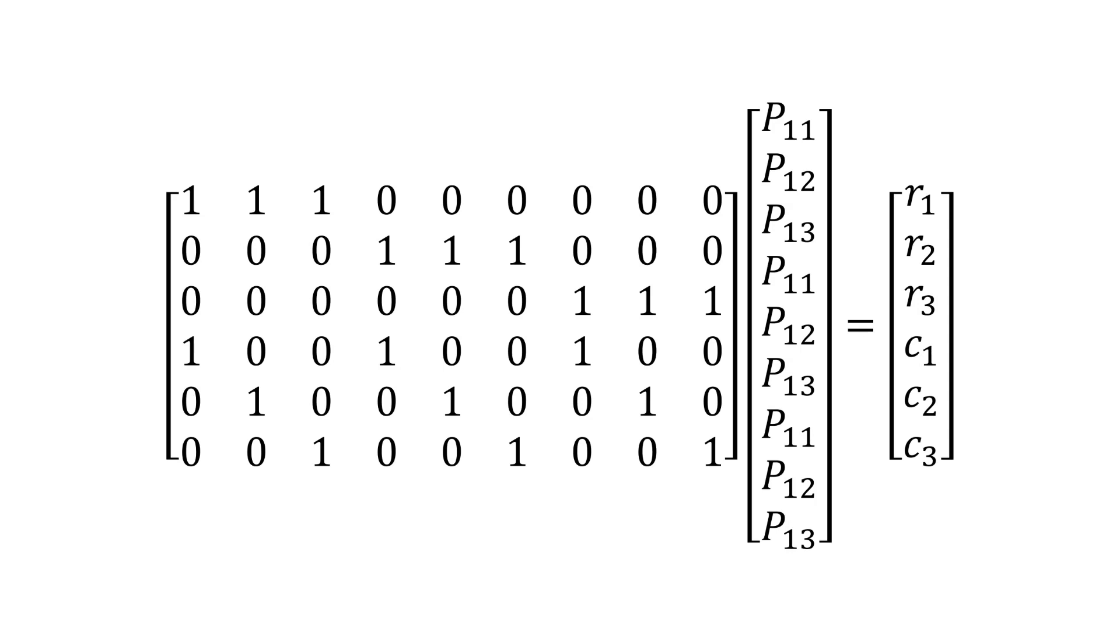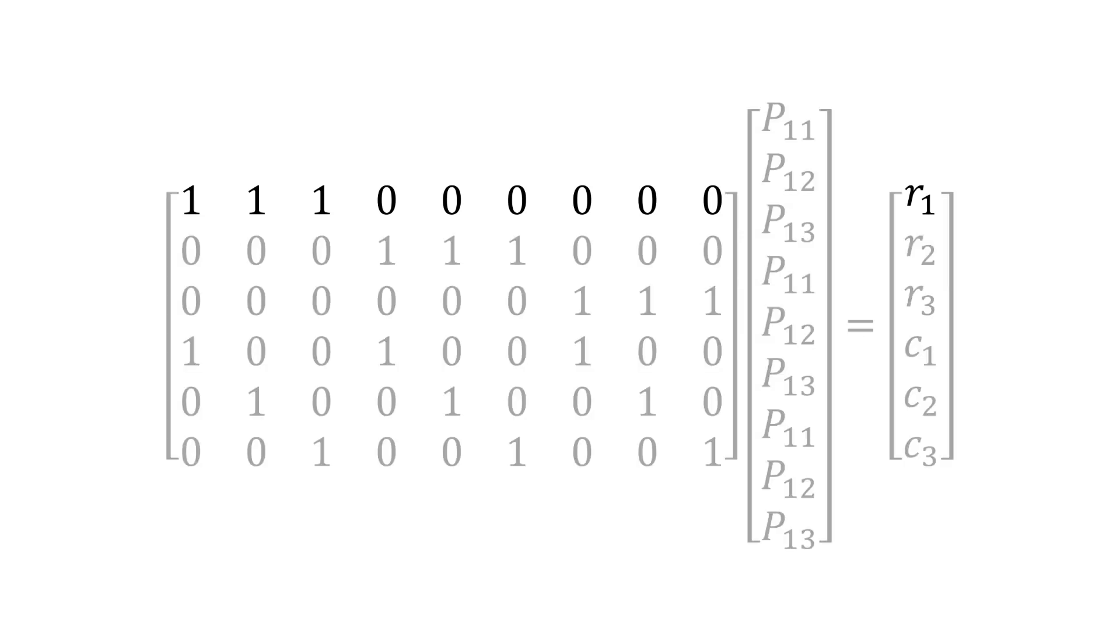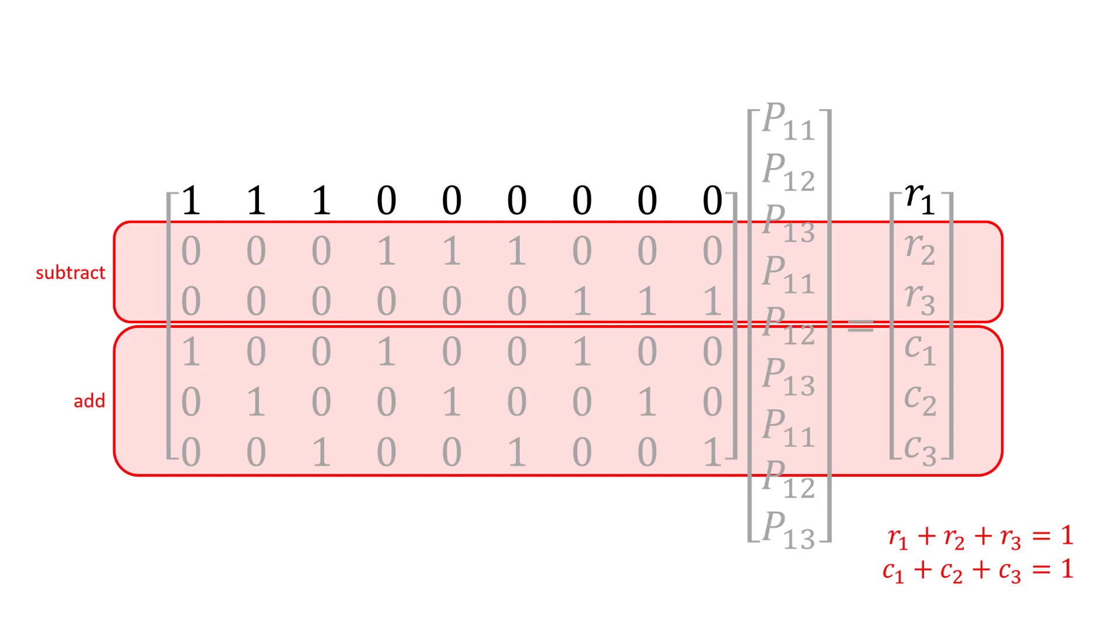In this example, it is easy to see that the first row is a linear combination of the other rows. Specifically, it can be constructed by adding the last three rows and subtracting rows 2 and 3, remembering that r and c sum to 1.